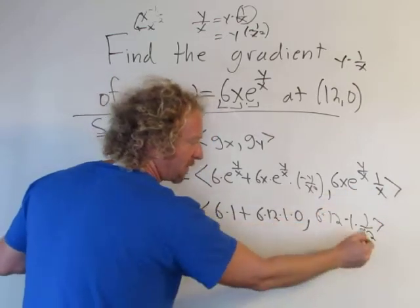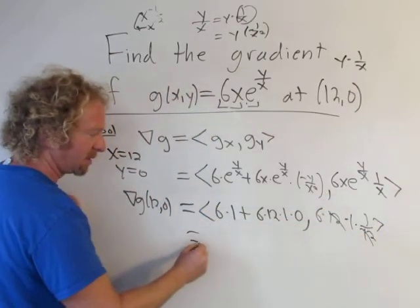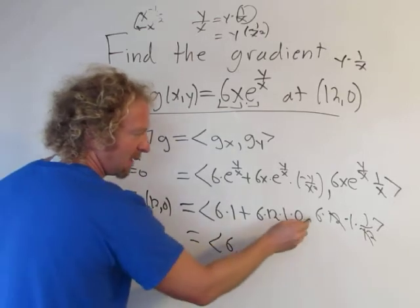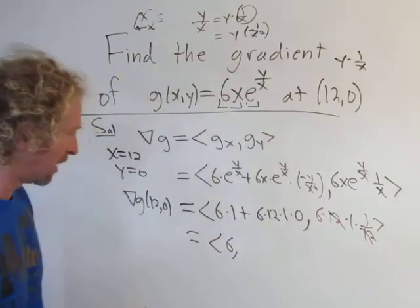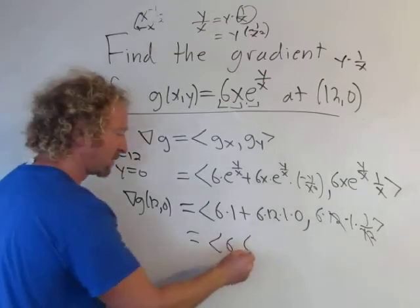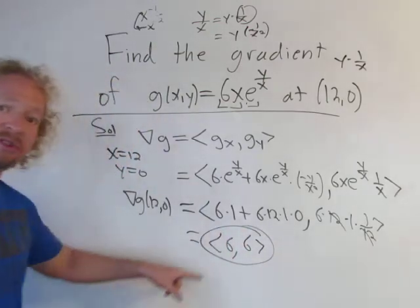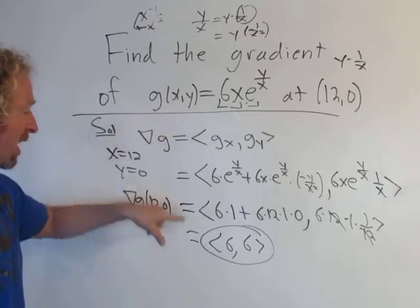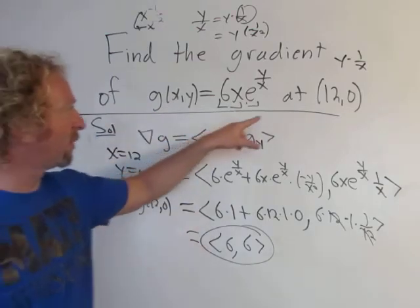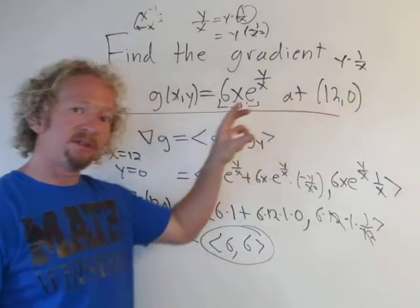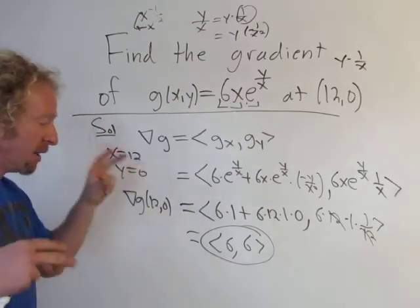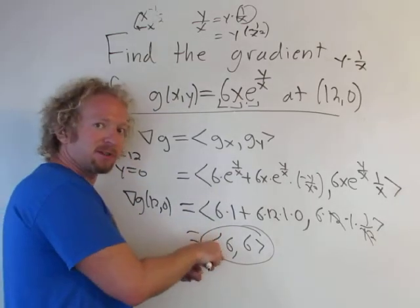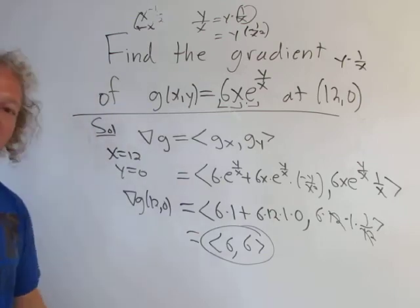The 6 times 12 and the one over 12 cancel, so the second component is 6. And the first component simplifies to 6 as well. So the gradient is the vector (6, 6). This means that at the point (12, 0), the function g increases most rapidly if you travel in the direction of this vector.